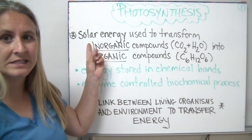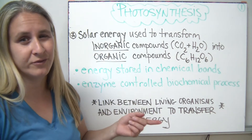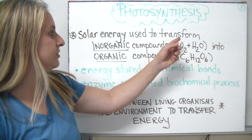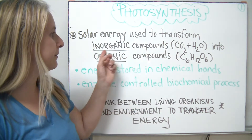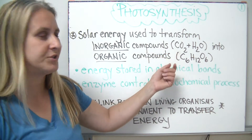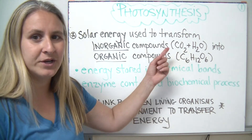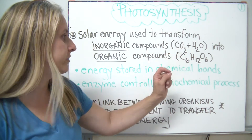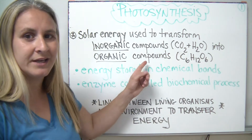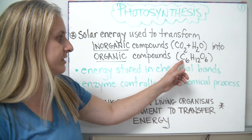The definition of photosynthesis is solar energy — solar refers to the sun, like your solar panels at home. It's used to transform inorganic compounds. Inorganic cannot have carbon and hydrogen in it. So in this case, the compounds we're transforming are carbon dioxide and water. We're going to transform them into organic compounds, which means they have to have carbon and hydrogen in them.